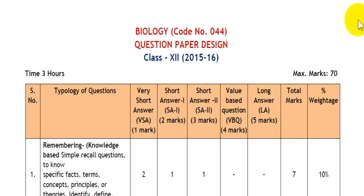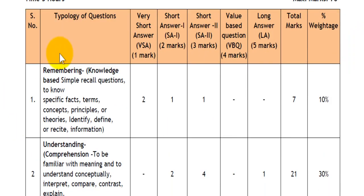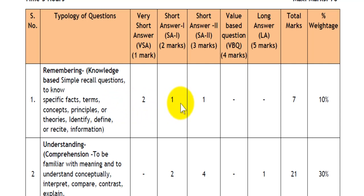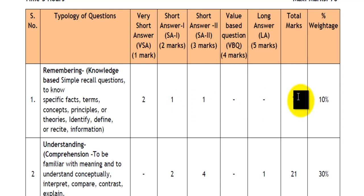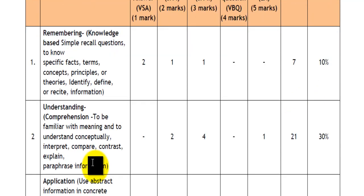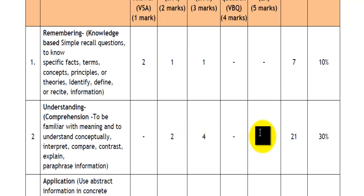This is the design of the question paper. First of all, there are questions based on remembering. There will be 2 one-marker questions, 1 two-marker question, and 1 three-marker question from this category, totalling 7 marks or 10% weightage. Questions based on understanding include 2 short answer 1 type questions of 2 marks each, 4 three-marker questions, and 1 five-marker question, totalling 21 marks.